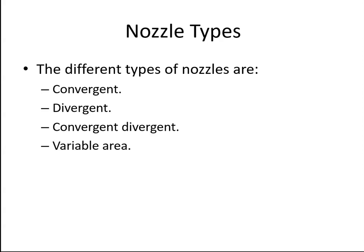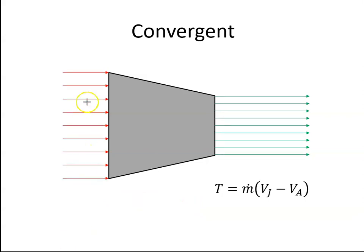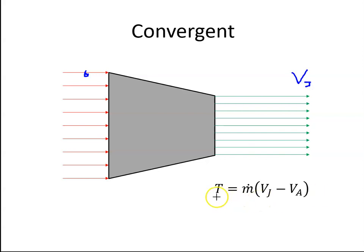The different types of nozzles for a gas turbine engine are convergent, divergent, convergent-divergent, and variable area. With a convergent type nozzle, we have subsonic flow coming in, and as the cross-sectional area reduces, the velocity increases and the pressure decreases. As air passes through the convergent nozzle, the velocity increases and we get a large jet velocity out the back of the engine. The thrust of the engine is the mass times the difference between the jet velocity and the aircraft velocity, so if the jet velocity is high we get greater thrust.